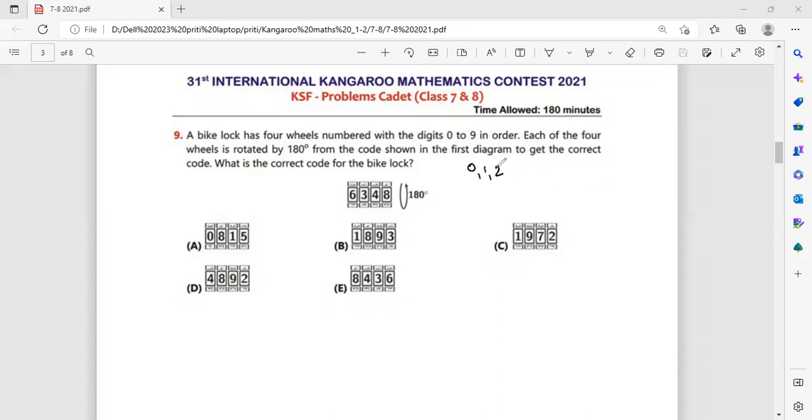Now the digits which are given to us are 0, 1, 2, 3, 4, 5, 6, 7, 8 and 9. So each of these columns have these 10 digits and it is saying that it has been rotated 180 degrees.